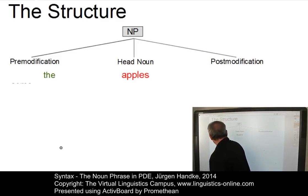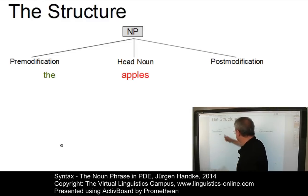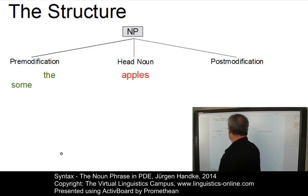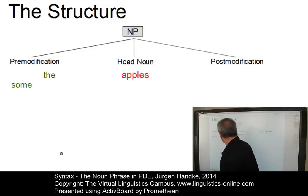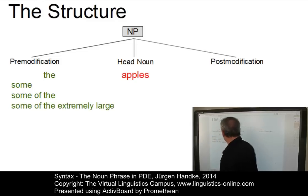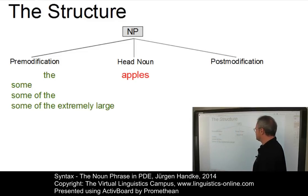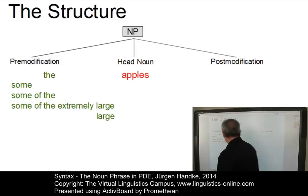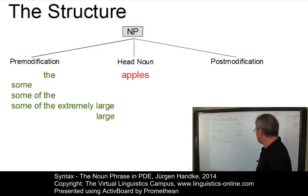For example, we could have a noun phrase where the pre-modification part is just realized by means of a determiner. We could have an element referred to as a pre-determiner — 'some apples'. We could have a combination of both — 'some of the apples'. Or take 'some of the extremely large apples', where we have determiners and a so-called pre-modifier. Or we could simply have a pre-modifier — in this case, an adjective: 'large'.